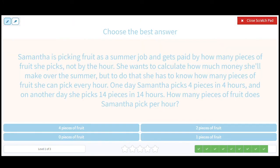So now we're doing, fun. We're picking fruits as a summer job and getting paid for fruit. So she wants to see how much money she'll make, but she needs to figure out her rate. So there's pieces of fruit. And there's hours. So she picks 4 pieces of fruit in 4 hours. And then she picks 14 pieces of fruit in 14 hours. We see her rate. It's just 1 fruit per hour. You can see that. So how many pieces of fruit did Samantha pick in 1 hour? 1. This has to match 1 piece of fruit. So 1 piece of fruit.